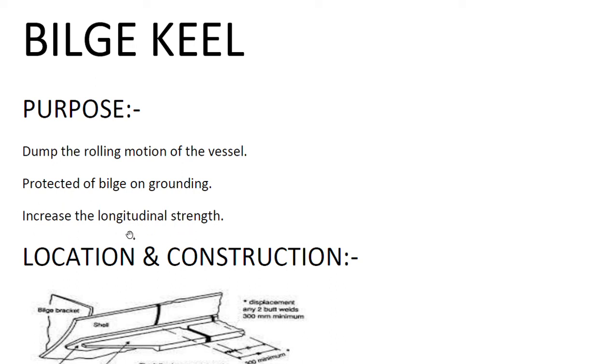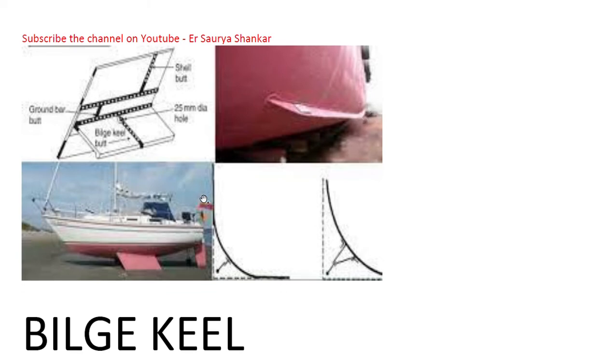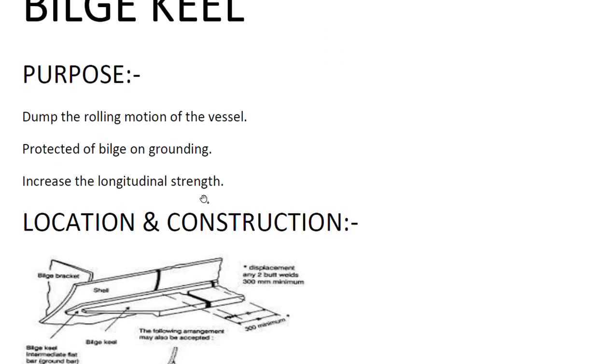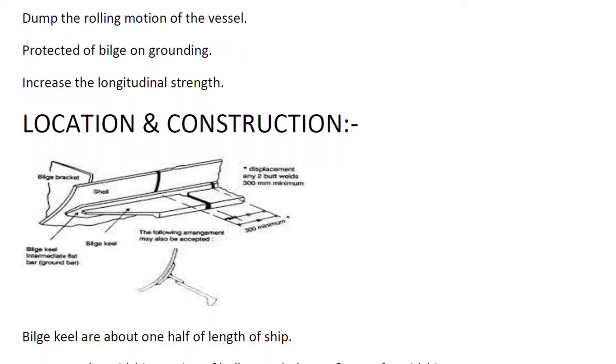When we talk about location and construction, you can see areas shown in the diagram. Any two butt welds 300 mm minimum. So one thing is clear that it is butt welded externally on the hull.